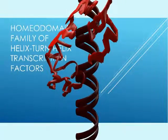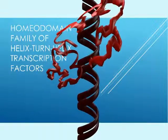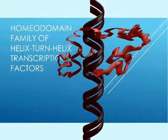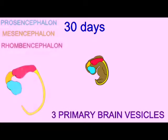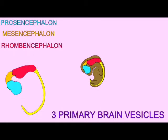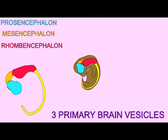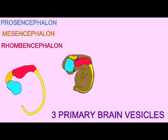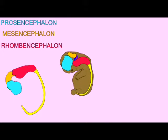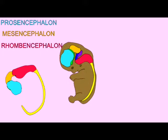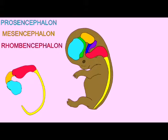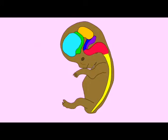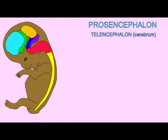Another group of HTH proteins developed in early eukaryotes, which include an area known as the homeodomain. These homeodomain proteins, including many organized in Hox clusters, provide essential transcription factors in developing embryos.